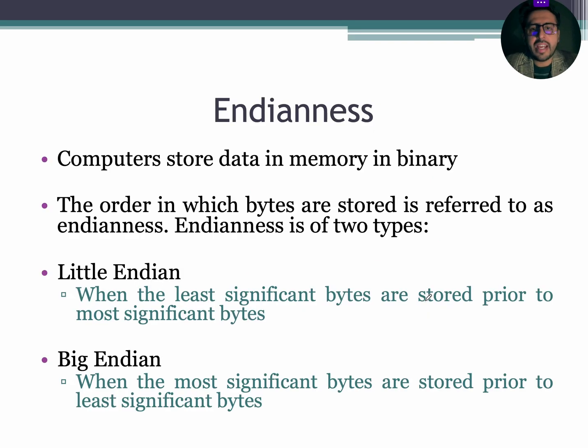Now, let's discuss endianness. Computers normally store data in binary form. The order in which bytes are stored in the memory is referred as endianness. The endianness is of two types.